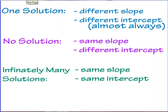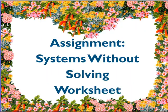Make sure this makes it into your notebooks. Remember: a one-solution system is when we have a different slope and a different intercept — sometimes we can have the same intercept, but not often. A no-solution system has the same slope but a different intercept. An infinitely many solutions system has the same slope and the same intercept. Make sure to write down any questions, rewind and write these down in your notebooks if you haven't already. Have a great day!